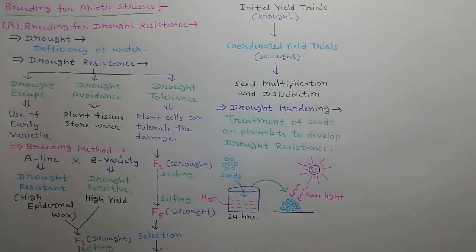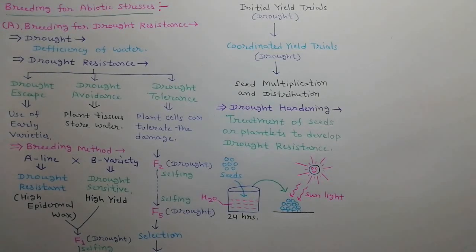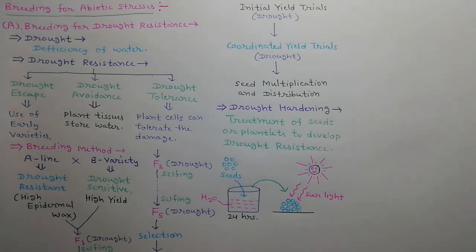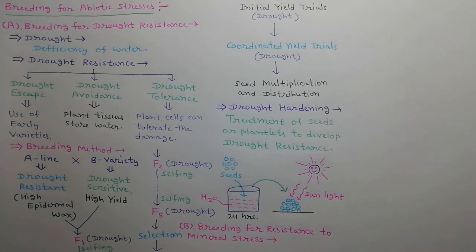Drought hardening is when seeds or plantlets are treated with a liquid to develop drought resistance.